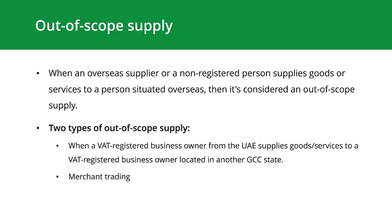Out-of-scope supply: when an overseas supplier or a non-registered person supplies goods or services to a person situated overseas, it's considered an out-of-scope supply. There are two main types. The first is when a VAT-registered business owner from the UAE supplies goods or services to a VAT-registered business owner located in another GCC state — that supply is considered out-of-scope.